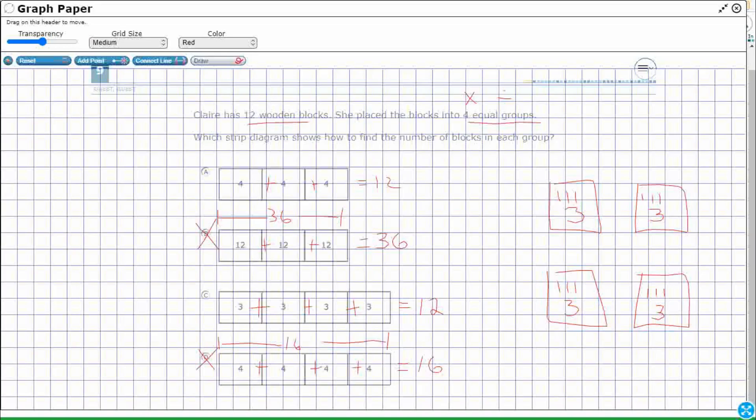So I've got 12 wooden blocks. Let's make a division sentence here. Divided into 4 equal groups is going to equal 3 in each group. And that's going to be my key to when I'm separating the difference between A and C. You see one of these is showing that 12 divided by 4 equals 3.